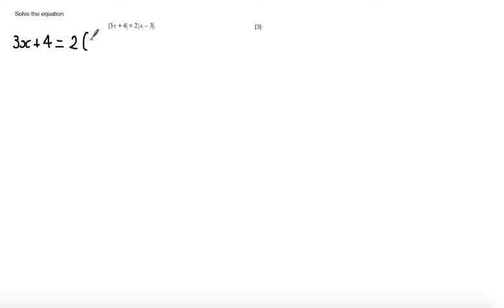So first of all we're going to say 3x plus 4 is equal to 2 times x minus 3. Rearranging to solve this equation, I get 3x plus 4 equals 2x minus 6.